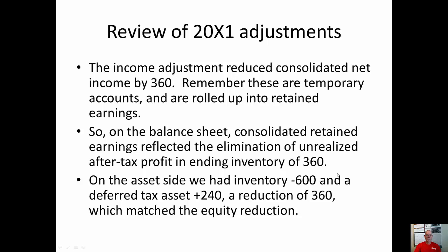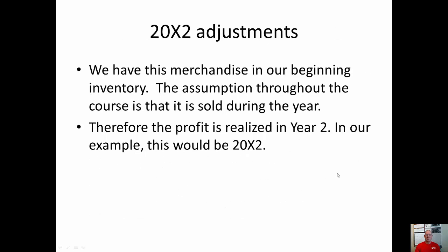Now we're going to move to the next year and look at what happens when that inventory is sold. In this course the assumption will always be that if you have intercompany sales of inventory in ending inventory, it is sold the next year. If it was not sold the next year, that would be like not selling anything from our beginning inventory, which would mean we actually had an impairment more than anything. So this merchandise is in our beginning inventory and it is sold in year 2, which in our example is 20x2.